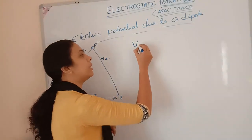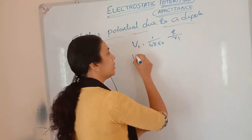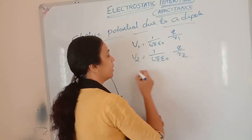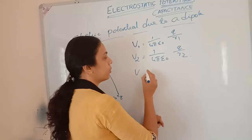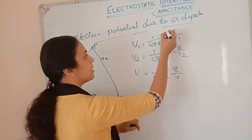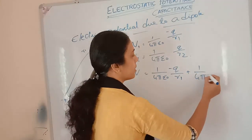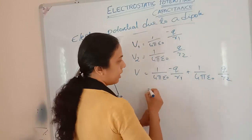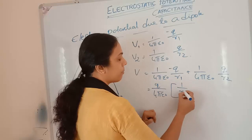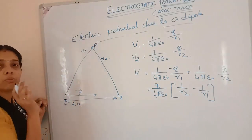The point P is at distance r1 from −q and at distance r2 from +q. The total potential V equals V(+q) plus V(−q). So V1 equals 1 by 4πε₀ times q by r1, and V2 equals 1 by 4πε₀ times q by r2. Adding these: V equals (q by 4πε₀) times (1 by r2 minus 1 by r1).